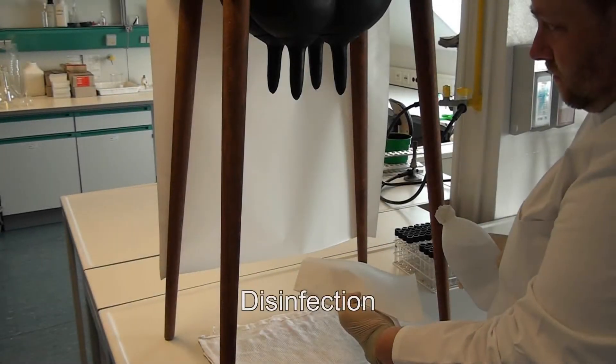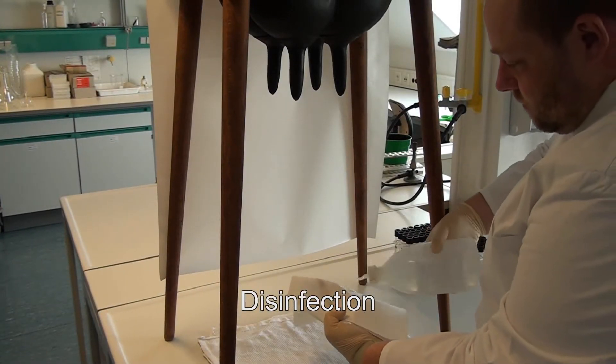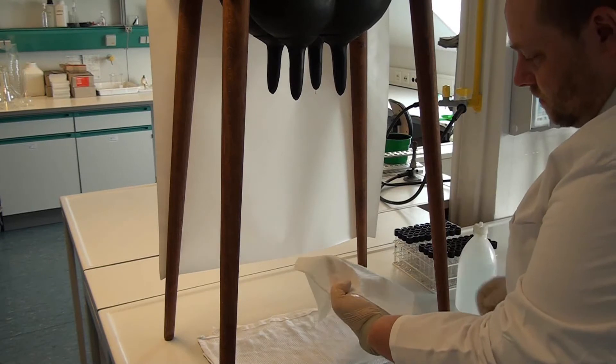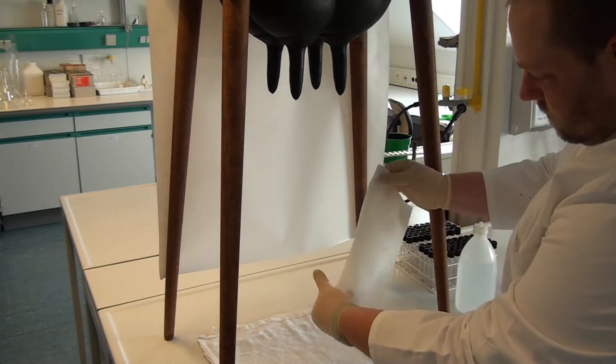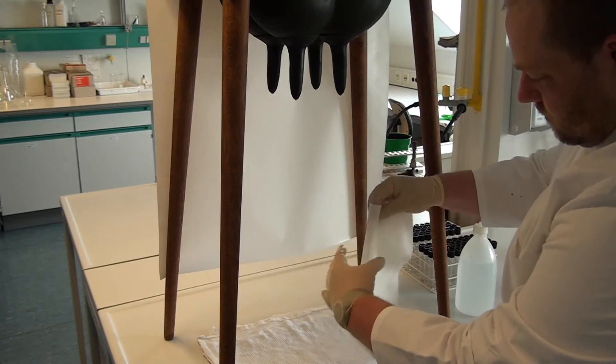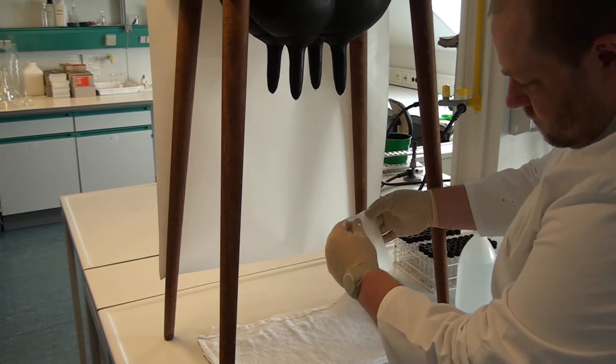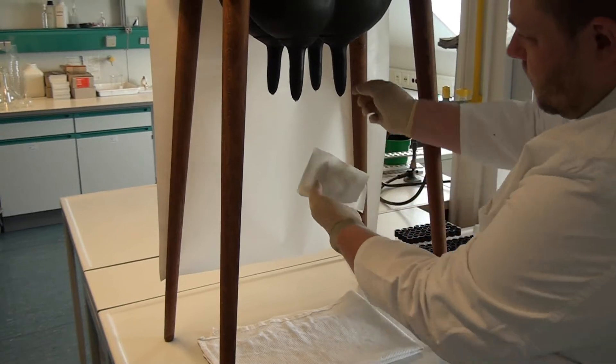By now, teats should be ready for milking, meaning that they appear plump and are warm. To disinfect them, either single paper towels are used for each teat, or towels are folded in a simple way as seen here. In any case, towels must be soaked with alcohol.